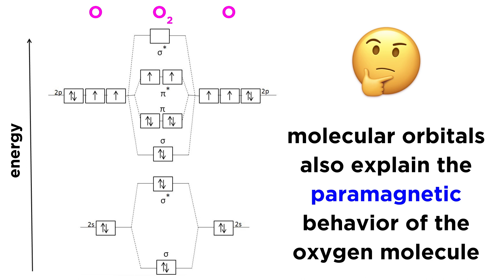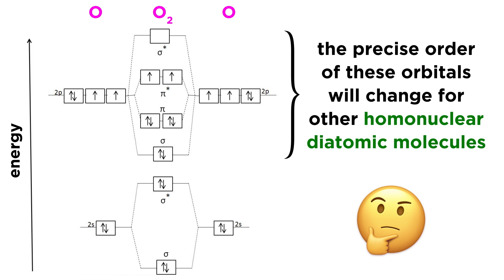But we also get an explanation for the paramagnetism of the oxygen molecule. We have two unpaired electrons in these antibonding orbitals, which does predict paramagnetism for this molecule. This is an example of the success of molecular orbital theory, as no other theory can account for this behavior.